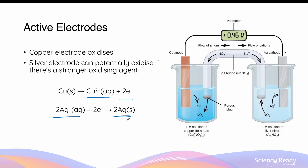Active electrodes not only are involved in redox reactions, they also serve a very important purpose in galvanic cells — they act as surfaces for conduction of electrons. When the copper electrode loses electrons, these electrons will flow towards the silver electrode. The silver electrode acts as an interface where electrons accumulate and are then gained by silver ions in a reduction reaction.